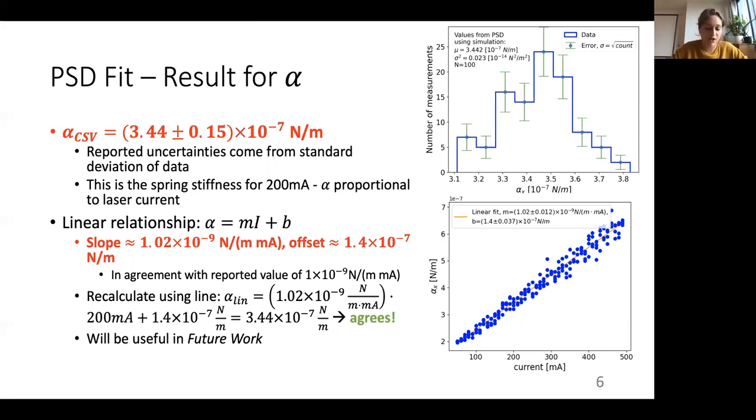And we can perform a quick sanity check to see if this result is reasonable by using the fact that the laser current in the spring stiffness are proportional. So for this, I started to vary the current from 50 to 500 milliamps and found many different alphas using the power spectral density method, and then plotted those values against one another. And then we can calculate a best fit line here, which we see over here with the parameters listed, with the optimal parameters listed. And then if we plug in the value of the current that we have, 200 milliamps, and we multiply by the slope and add the offset, then we see that the value that we get from the best fit line is pretty much the same as what we got for the PSD fit. So we see that this is pretty useful. This will also be useful in future work, which I'll discuss in a little bit.